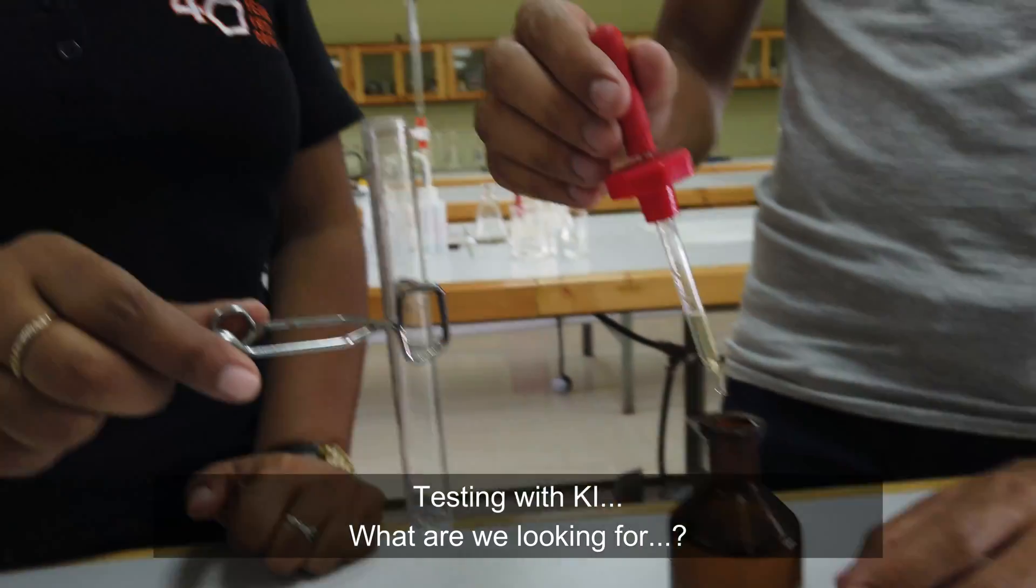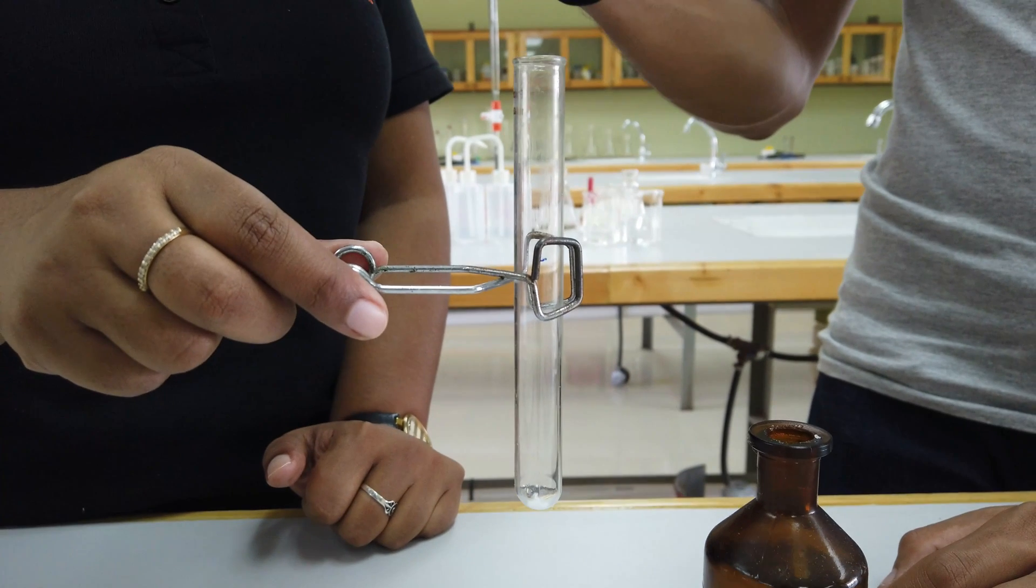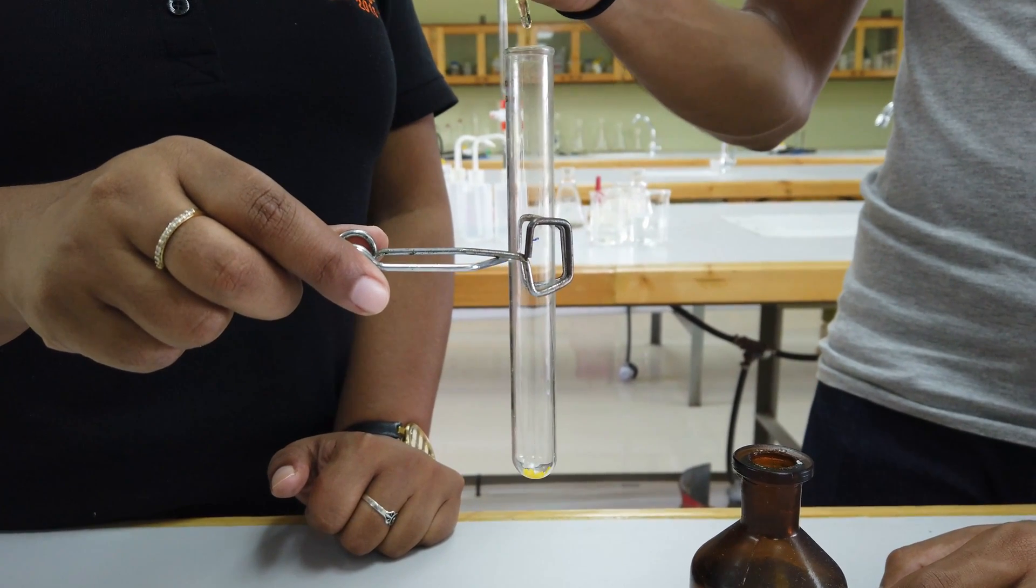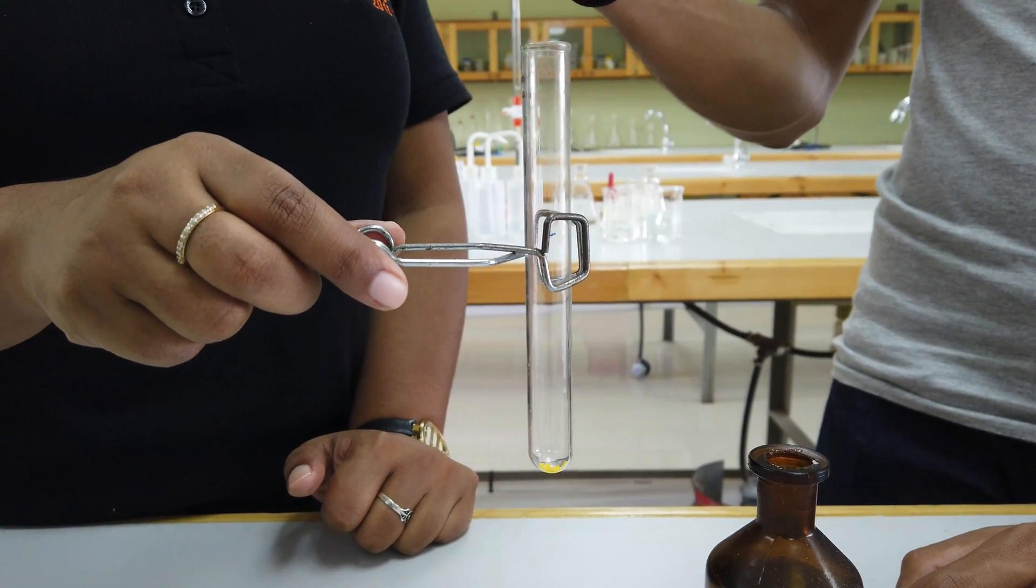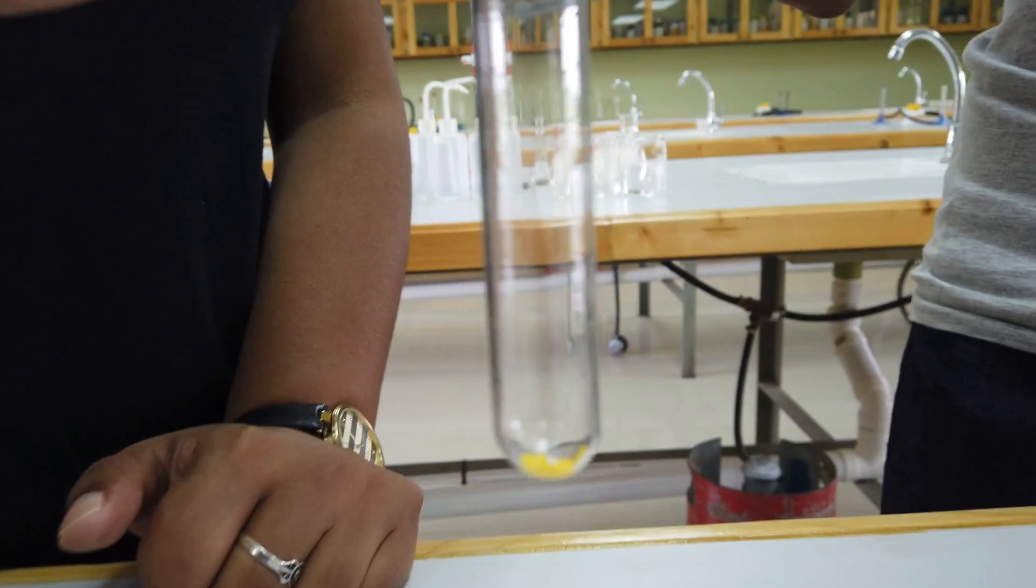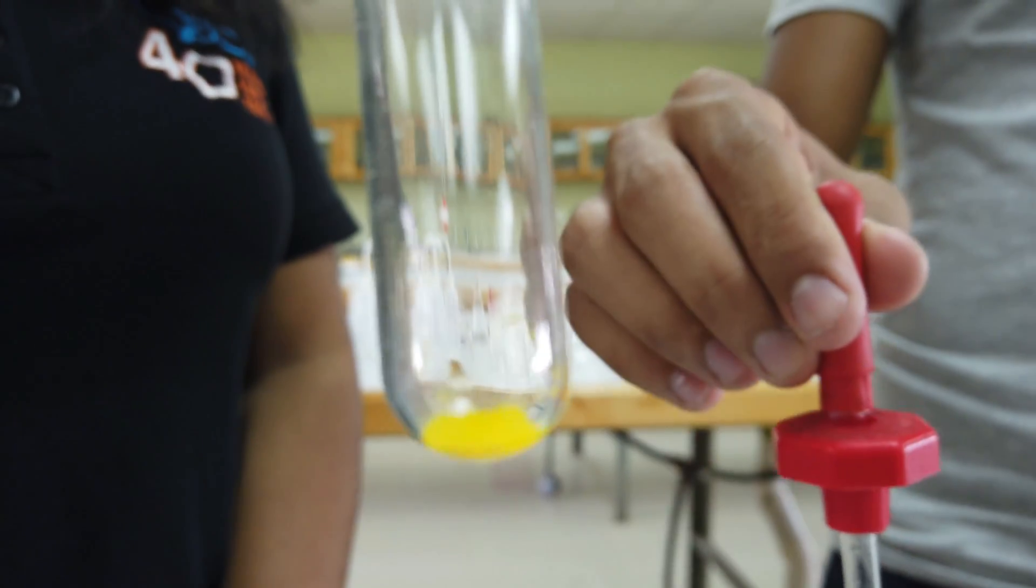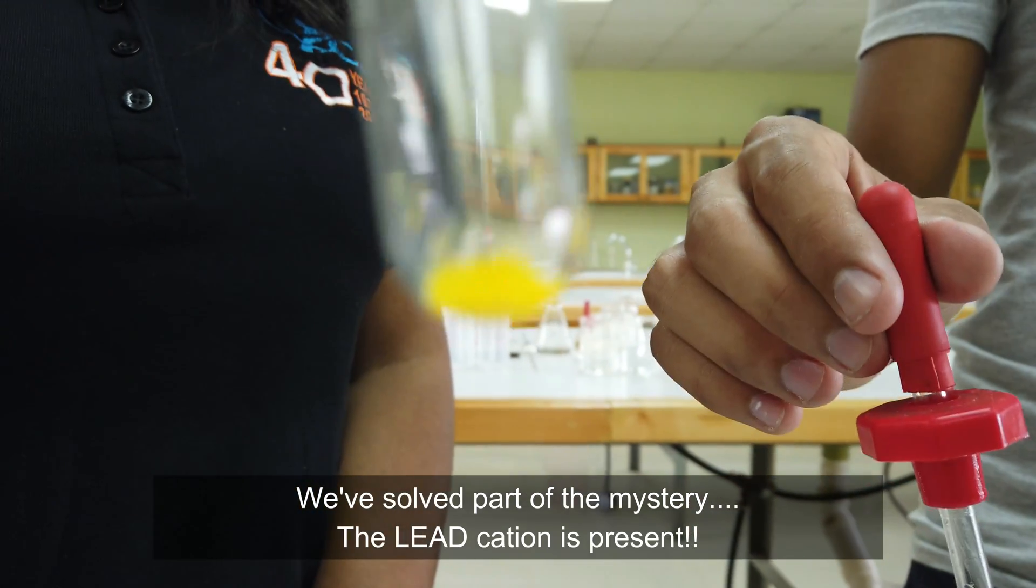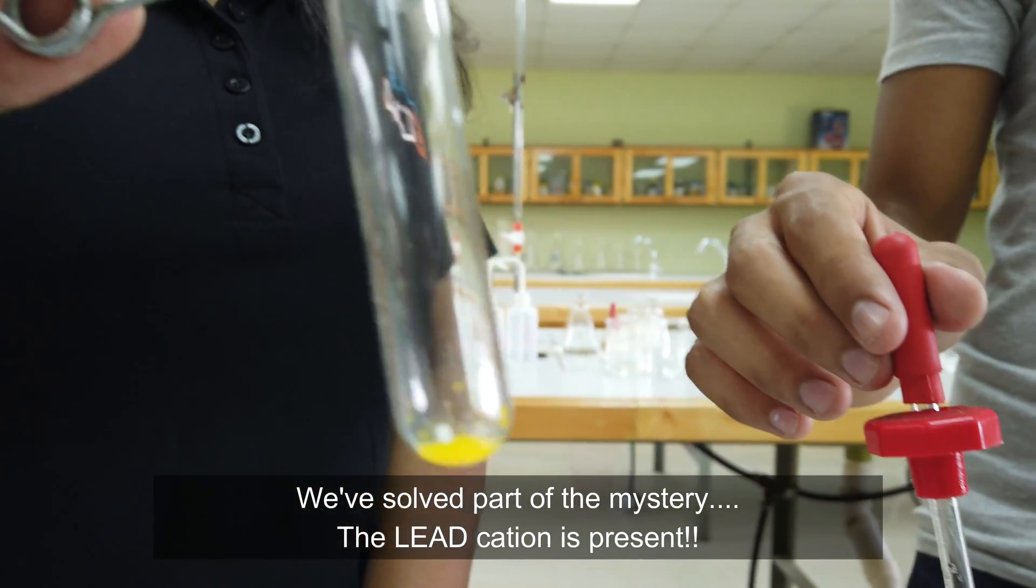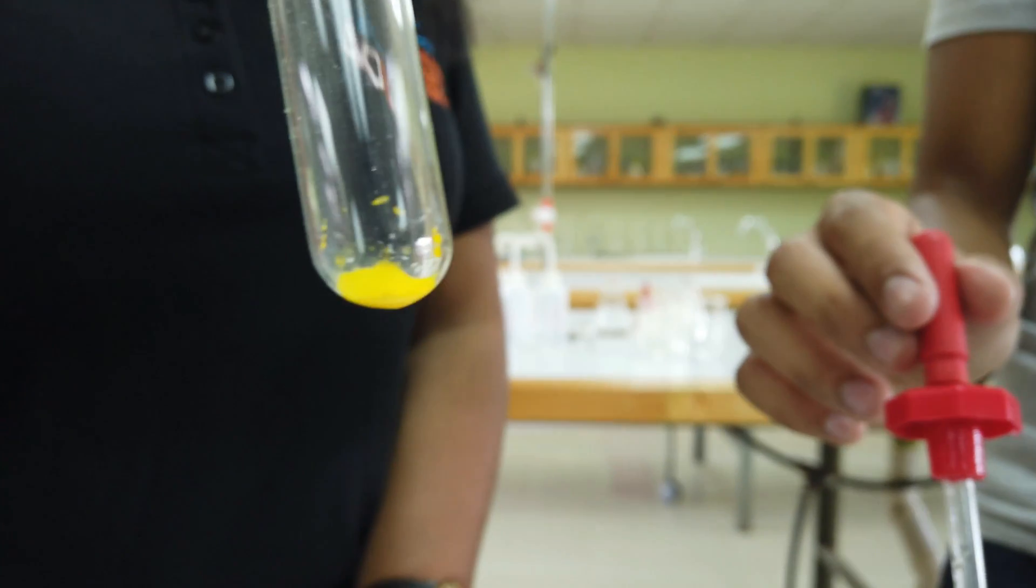This time we're going to use some potassium iodide. Again, we're looking for a change of color and a change in solubility. Did you get a change in color? That bright yellow precipitate that you see - we can't argue with that. As soon as you see that bright yellow precipitate with KI, we know that the cation is lead.